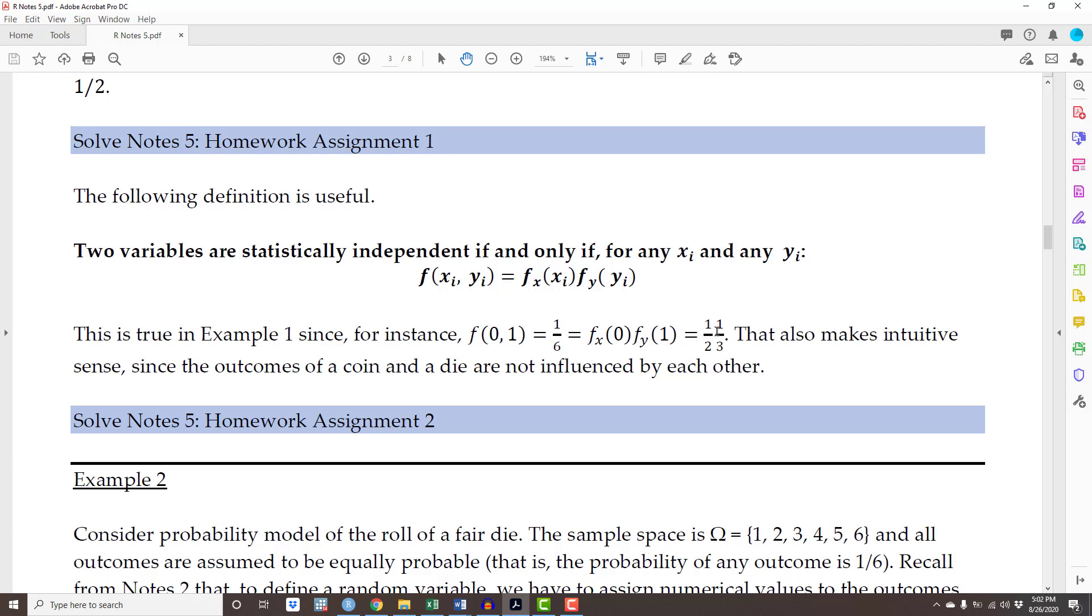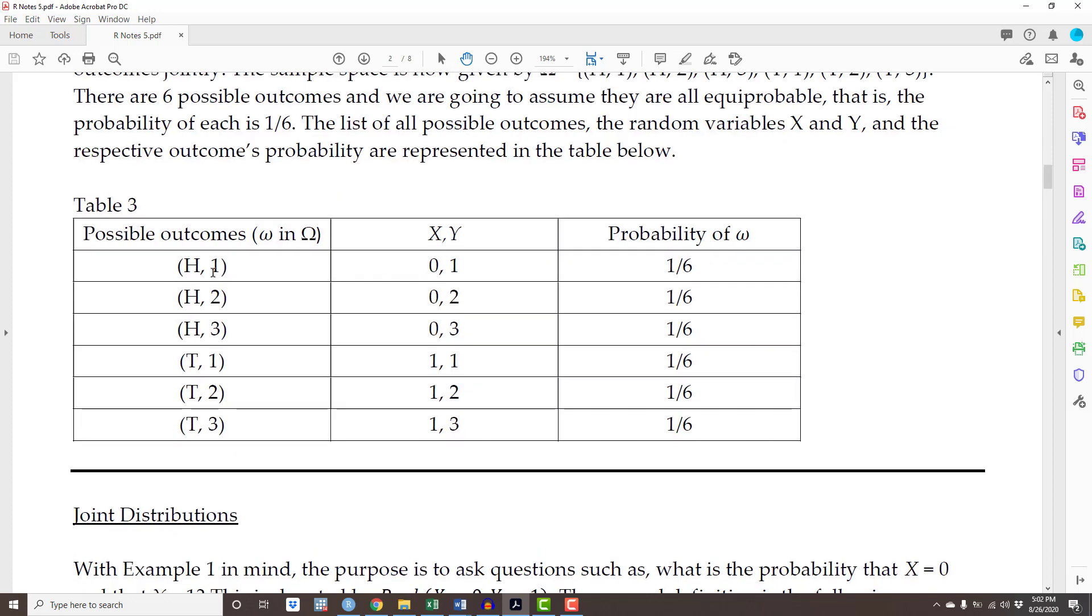Half times 1 third equals 1 over 6, and that is exactly what we had in our model. Here, heads and 1 - the probability that I flip a coin and get a head and I throw a die and get a 1. That's what we had modeled. The probability was 1 over 6.